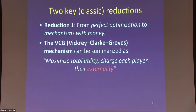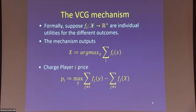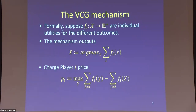VCG is a reduction from perfect optimization to mechanisms with money with very nice properties. It can be summarized in a simple sentence: maximize utility — make the world as happy as possible — and charge each player their externality. The externality caused by player i is how much loss of utility having to accommodate them causes to the rest of the system. Formally, we have utility functions from some space X, where for every point x you get how happy player i would be. The units are money units because we're going to charge them money.